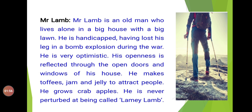The second protagonist is Mr. Lamb, an old man who lives alone in a big house with a big garden. He is physically challenged, having lost his leg in a bomb explosion during the war. He is very optimistic — of positive approach. His openness is reflected through the open doors and windows of his house. He makes toffees, jam and jelly to attract people, grows crab apples, and is never perturbed at being called Lambie Lamb.